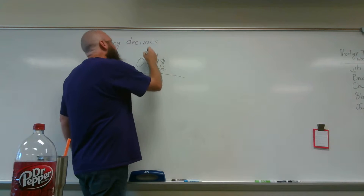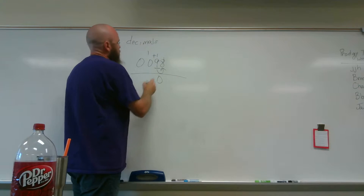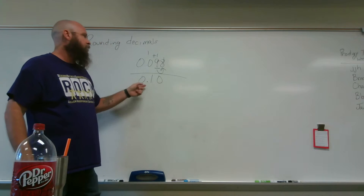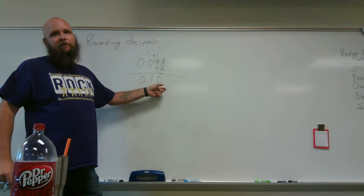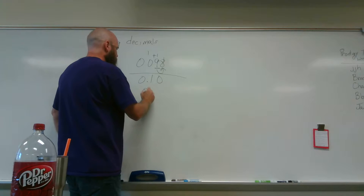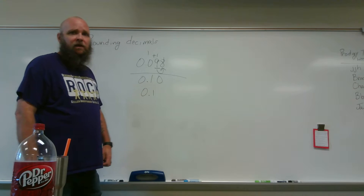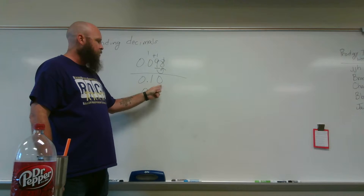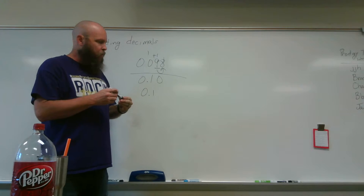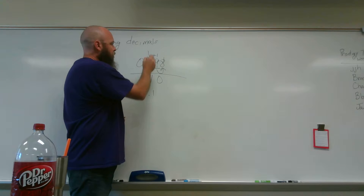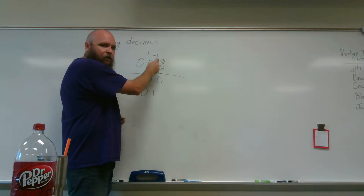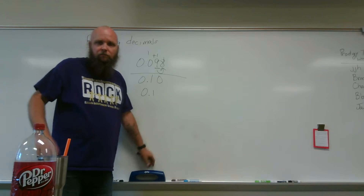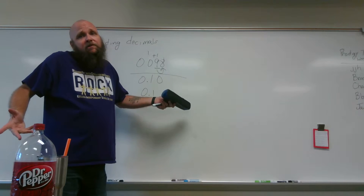Nine plus one is ten. Put a zero, carry the one. That's a one. So we have zero and ten hundredths, or zero and one tenth. How'd you do that when you rounded to the hundredths? Because it became a zero. So these are the tricky ones where you're going to have to actually carry. When you're rounding a nine and you're rounding it up, you're going to have to actually carry that.